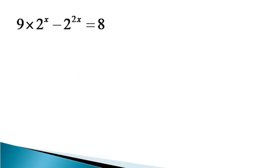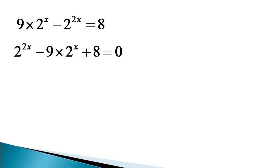Bringing all the terms on one side, multiplying by minus 1 and readjusting, we get the equation as 2 raised to the power 2x minus 9 times 2 raised to the power x plus 8 is equal to 0.